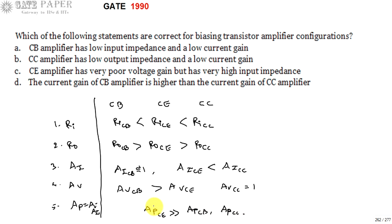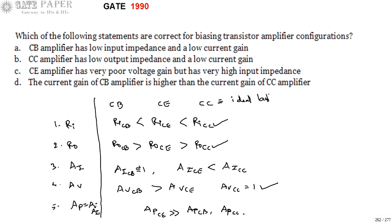These are the important properties. Because RI of common collector is very high, R0 of common collector is very small, and voltage gain is equal to 1, common collector acts as an ideal buffer — specifically a voltage buffer. These three characteristics make common collector useful as a buffer.